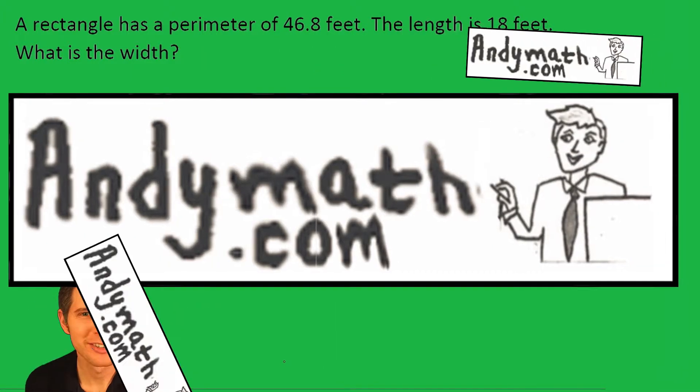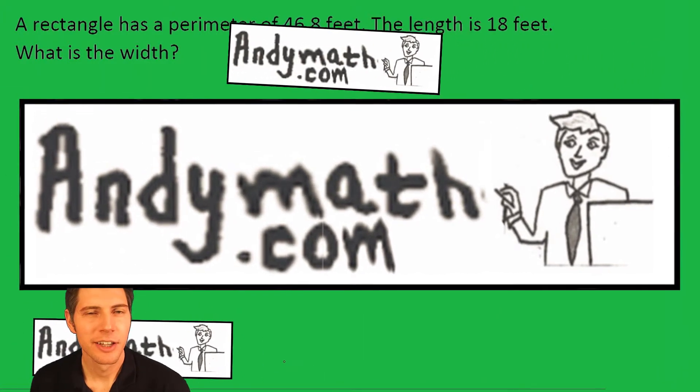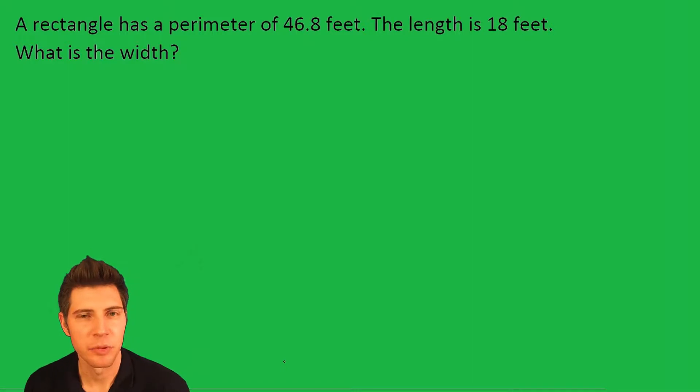Hey guys, welcome to this video. A rectangle has a perimeter of 46.8 feet. The length is 18 feet. What is the width? So if we sketch a rectangle, they're telling us the length is 18 feet.